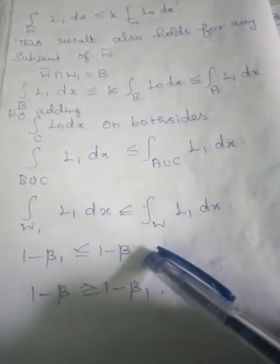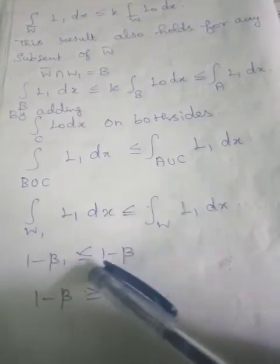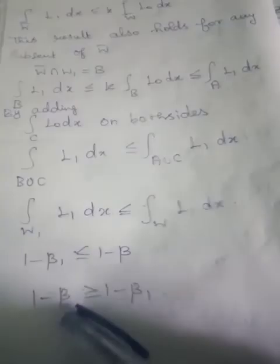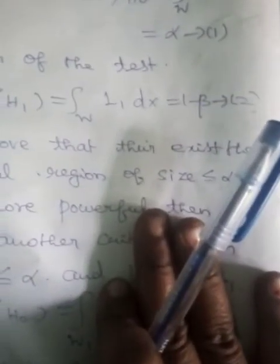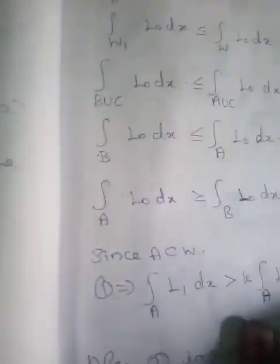Therefore, 1 − β1 ≤ 1 − β, which means 1 − β ≥ 1 − β1. This proves the theorem — W is the most powerful critical region. This is the important theorem; it is compulsory. Thank you, students.